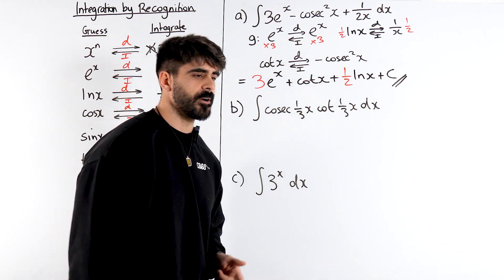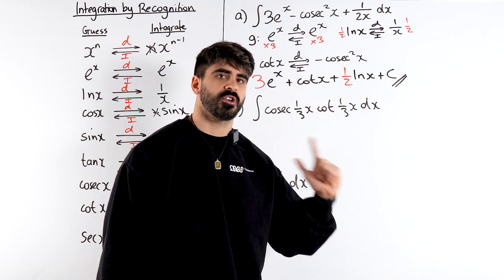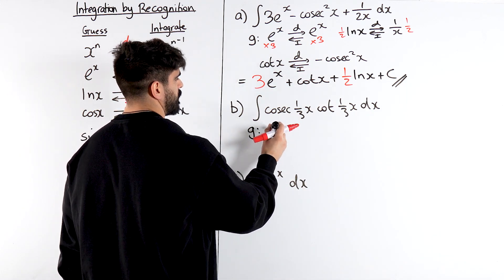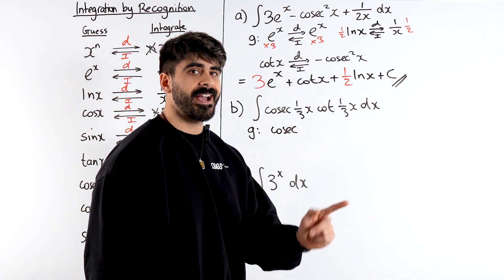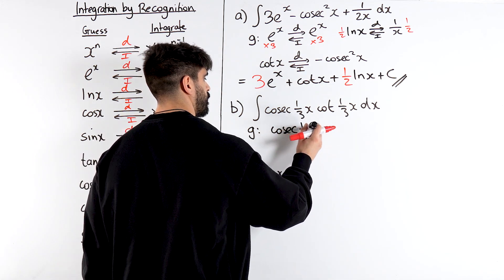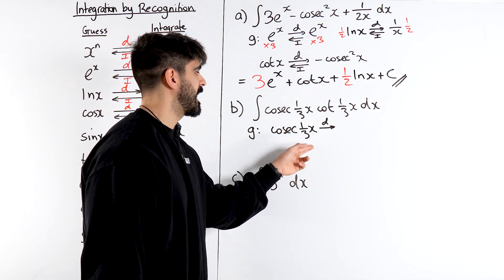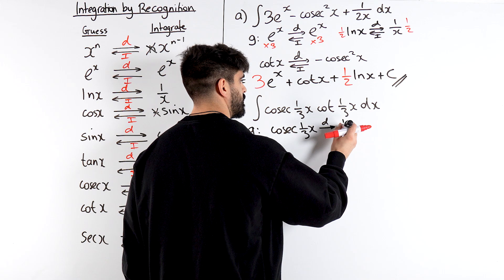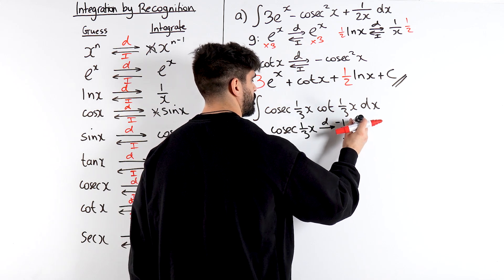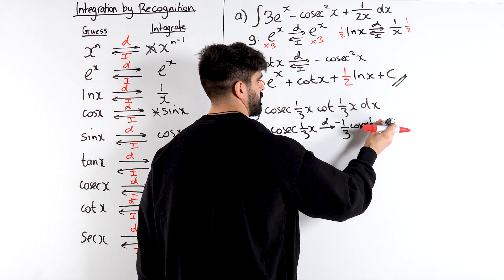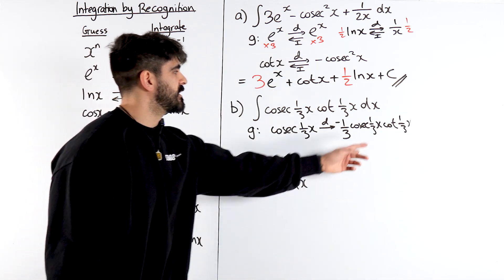Take a look at this. Cosec cot. I know cosec differentiates to cosec cot. So I'm going to make this guess of cosec. Because cosec differentiates to cosec cot. The angle must always stay the same. Cosec of 1 third x. Now we just need to differentiate that. What's the first thing we always do? We differentiate the angle. 1 third x differentiates to 1 third. Then cosec goes to negative cosec cot. So we get negative 1 third cosec 1 third x cot 1 third x. So that means this integrates back to this.